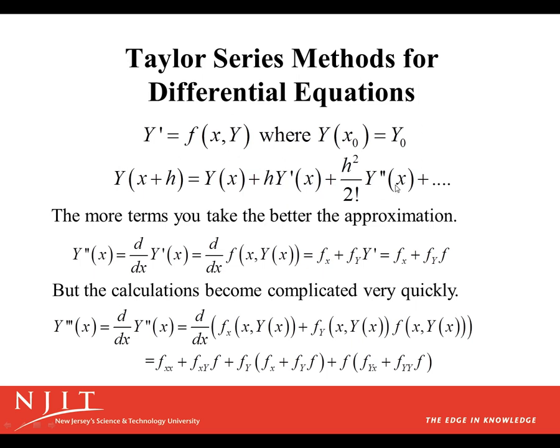Now, we can take more terms of our Taylor series method when we're trying to solve the ordinary differential equation Y' = F(x,Y) with an initial condition Y(x₀) = Y₀. We could take as many terms as we want of the Taylor series because we know taking more terms gives us a solution that is better for a longer distance away from the initial point than if we were to take fewer terms. The more terms you take, the better the approximation.